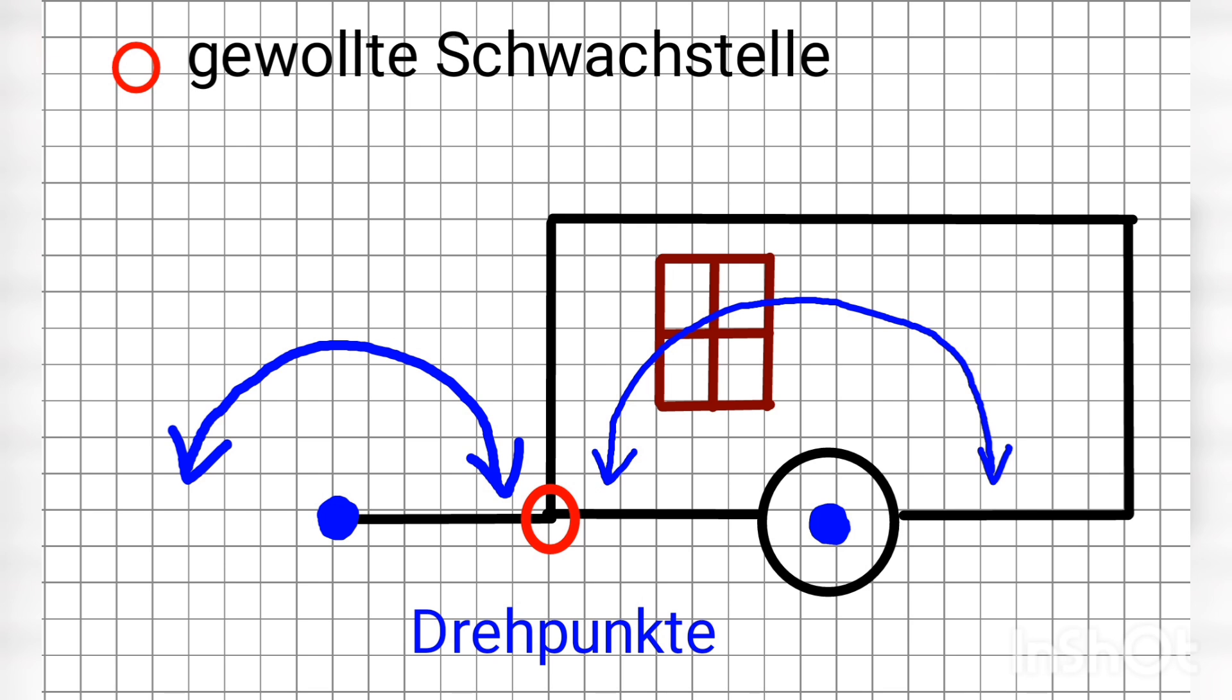These two points want to rotate, trailer and bicycle swing differently, and where the red circle is, the strongest forces arise. We've already established that.